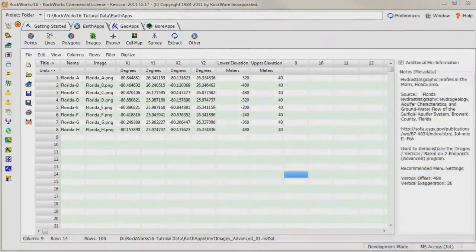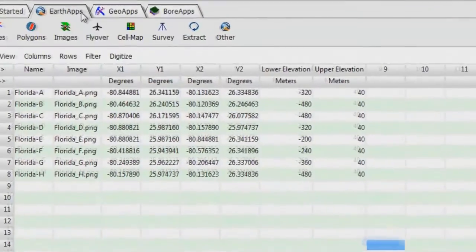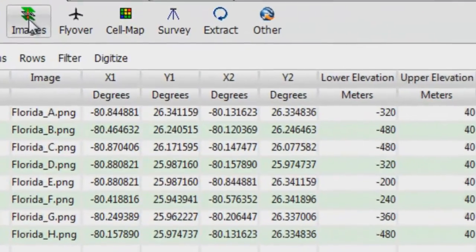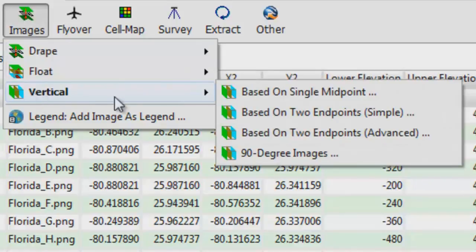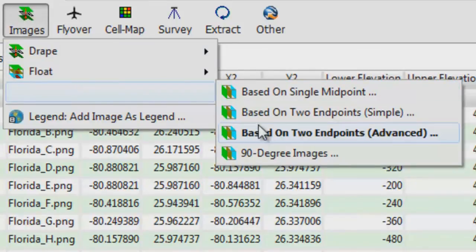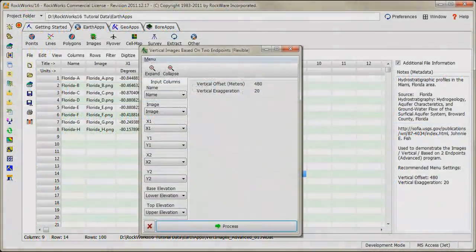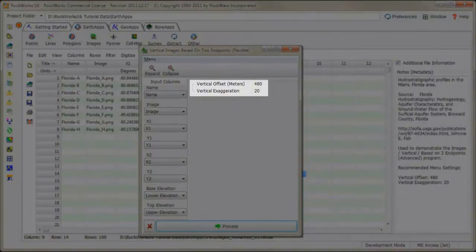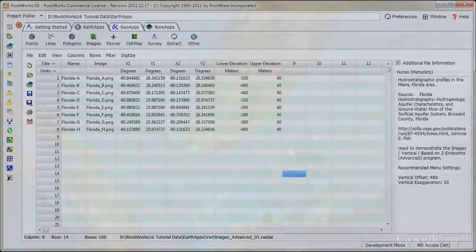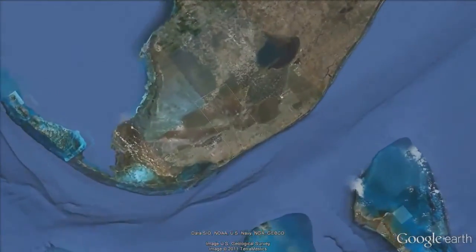Once the data has been entered or imported, the Images Vertical Based on Two Endpoints Advanced option is selected. By defining which columns contain the necessary information along with the vertical offset and exaggeration, a fence diagram is created within Google Earth.